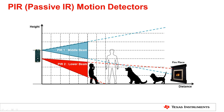Many real-life systems utilize a dual detector setup like shown, but for our video, we'll stick to analyzing a single detector circuit for simplicity. TI has a large portfolio of nanopower devices that are well suited for low power PIR systems, making it easy to find everything in one place. We'll highlight some key devices as we step through our system.